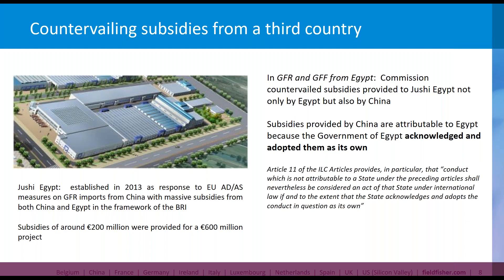With all this information presented to the Commission, it concluded that under international law interpretation of what constitutes government action, what Egypt did here is basically acknowledging and adopting as its own activities and subsidies those coming from China. Therefore those subsidies were attributable to Egypt. This is really a massive step forward in the interpretation and application of subsidy rules, and we hope it sets a strong foundation for the future to address Chinese circumvention hubs popping up in several countries.